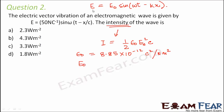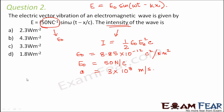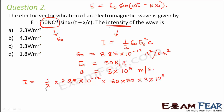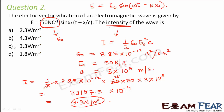The value of E₀: comparing the given expression with the general expression, we see that E₀ = 50 N/C. The value of c is 3 × 10⁸ m/s. So intensity = ½ × 8.85 × 10⁻¹² × 50 × 50 × 3 × 10⁸. Calculating: 2 × 25 = 50, and the full calculation gives 33187.5 × 10⁻⁴, which is approximately 3.3 W/m². So the correct option is C.